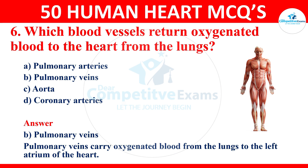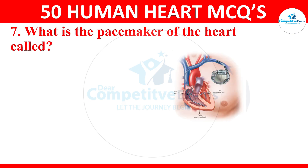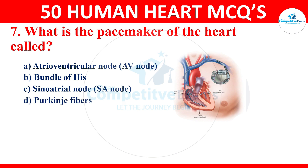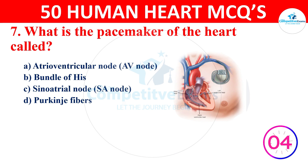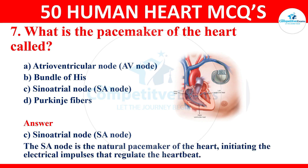Question 7: what is the pacemaker of the heart called? The options are atrioventricular node (AV node), bundle of His, sinoatrial node (SA node), or Purkinje fibers. The right answer is the sinoatrial node, or SA node. The SA node is the natural pacemaker of the heart, initiating the electrical impulses that regulate the heartbeat.